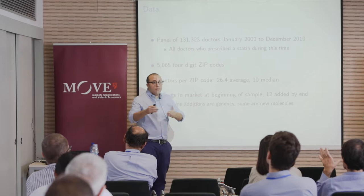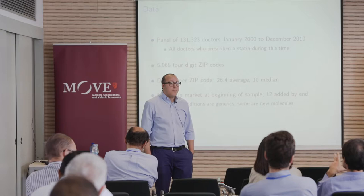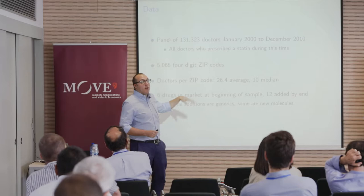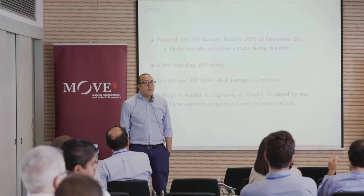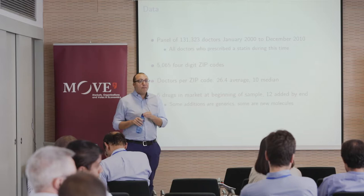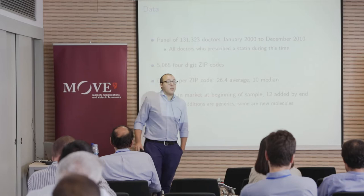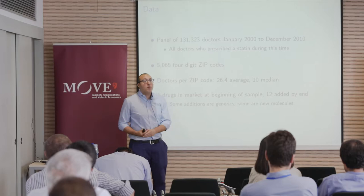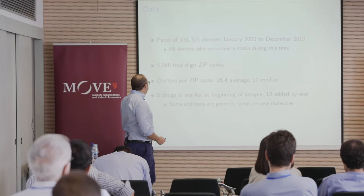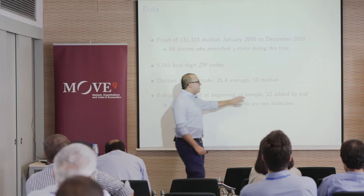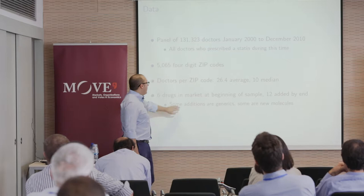This is an unbalanced panel: if a doctor ever prescribed a statin once during the decade, they're in the dataset. I know the number of prescriptions per month, which gives a sense of how big a practice is, but not whether it's a large private practice or in a hospital. There are six drugs in the market at the beginning of the sample, and 12 are added by the end of the decade. Generics are an interesting way to slice this—new molecules versus drugs becoming generic.